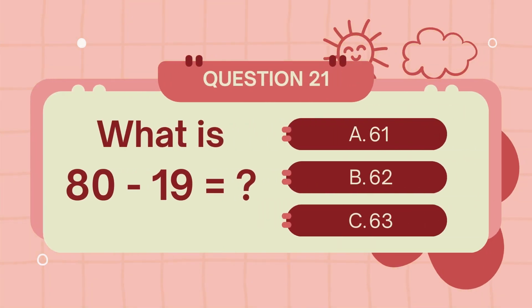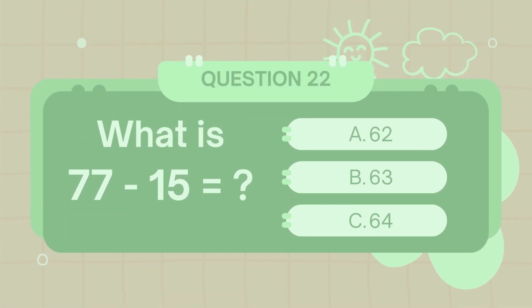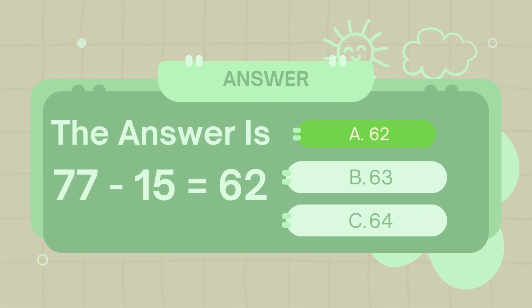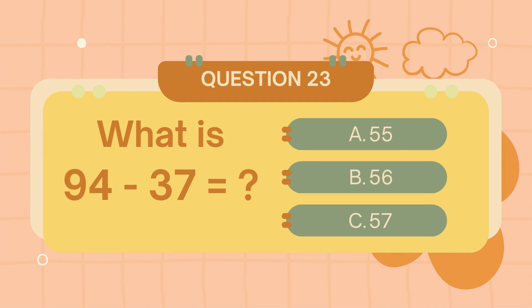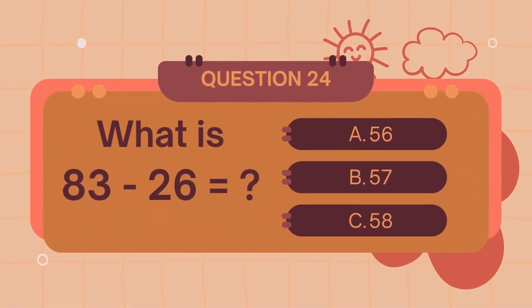What is 80 minus 19? The answer is 67 minus 15. What is 77 minus 15? The answer is 62. What is 94 minus 37? The answer is 57.